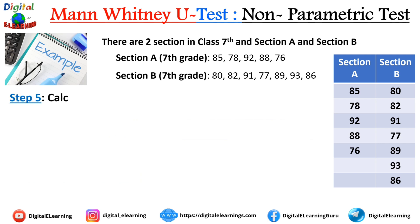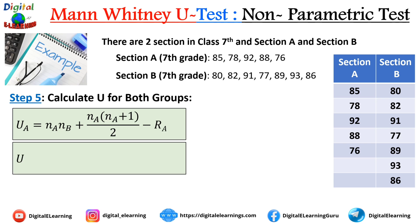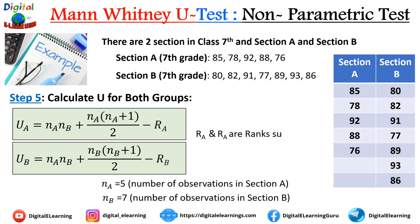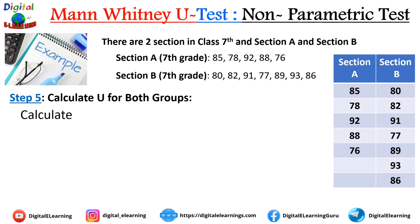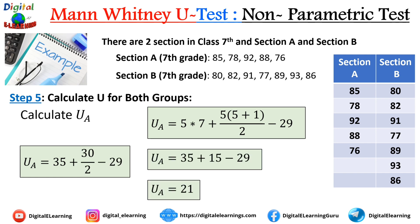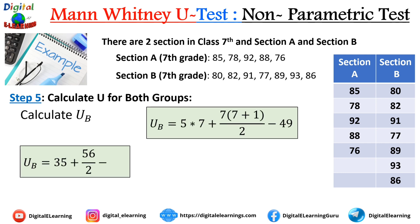Step 5: calculate the U value for both groups. The formula is U_A = N_A × N_B + N_A(N_A + 1)/2 − R_A, and similarly for U_B. Here N_A = 5 and N_B = 7, the number of observations in each section, while R_A and R_B are the rank sums from Step 4. Plugging in the values, U_A = 21 and U_B = 14.